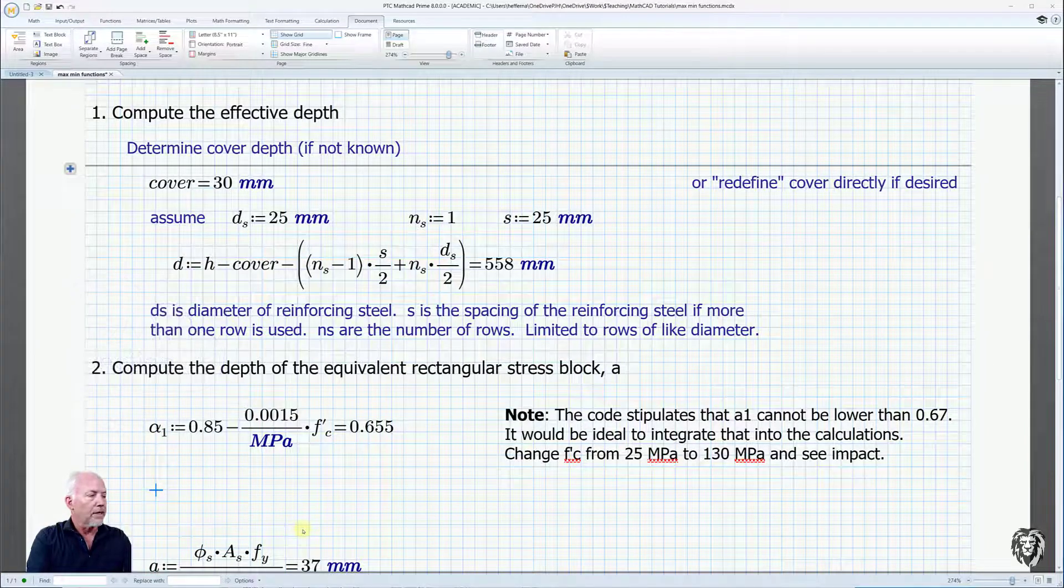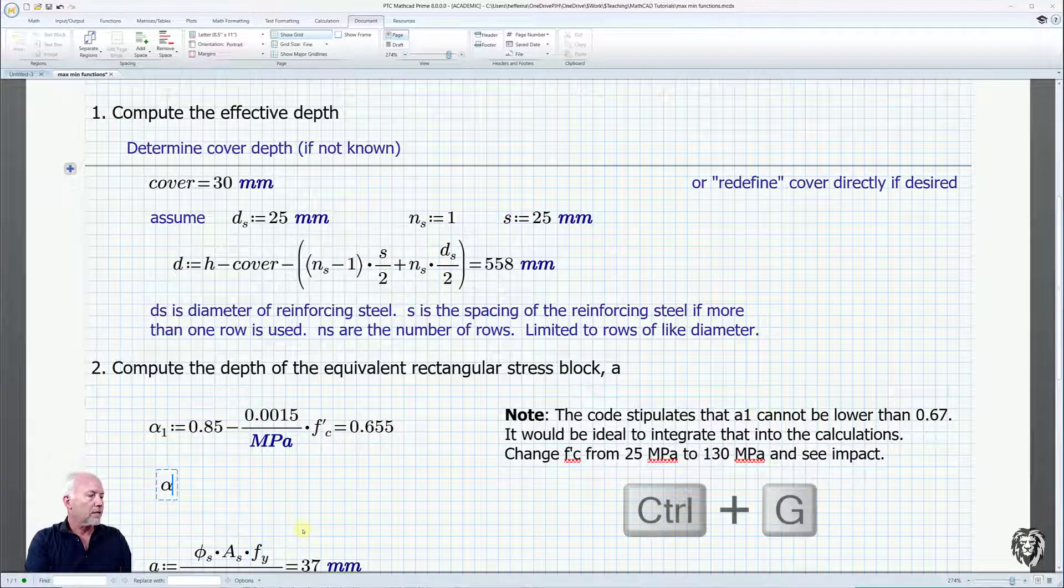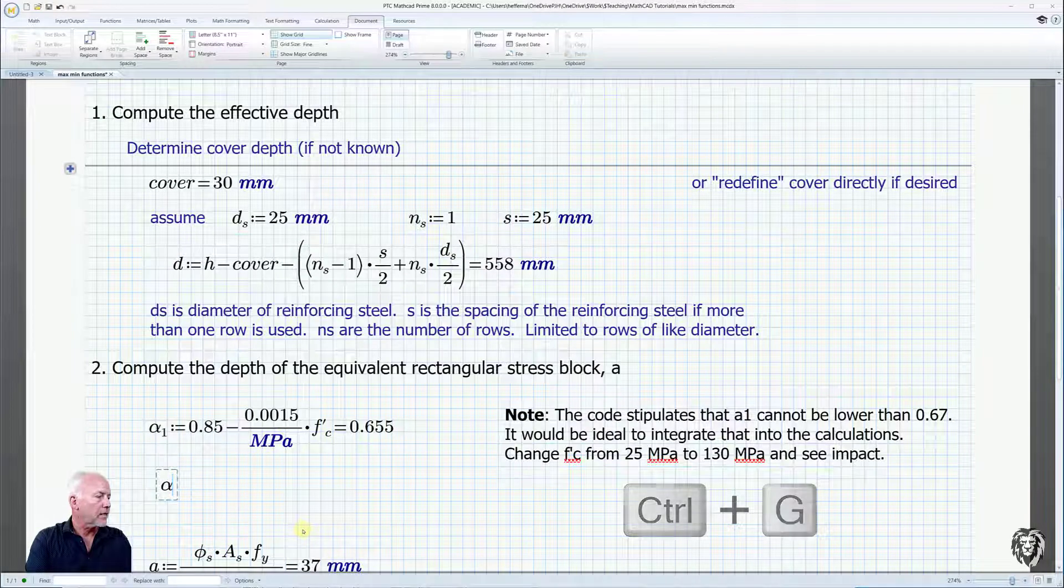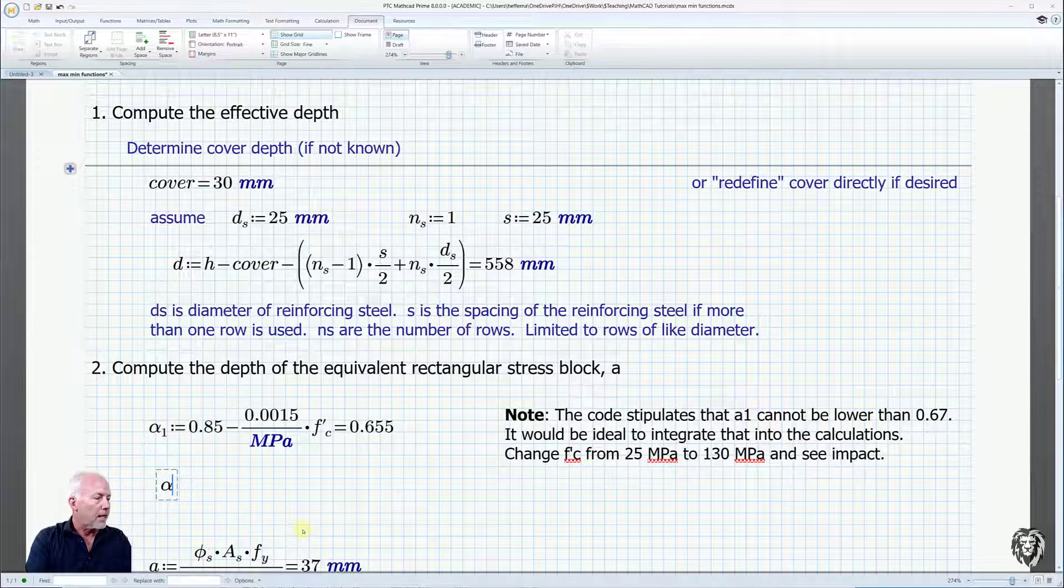I'm going to start over here and go alpha, control G to turn that into the Greek letter, control minus or dash to get to the lowercase. And so we go alpha one.